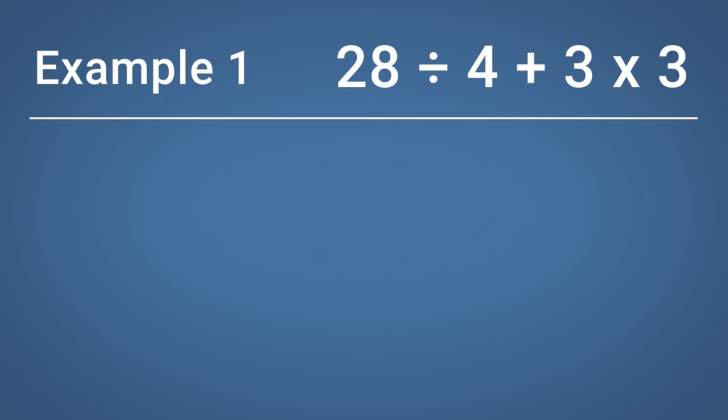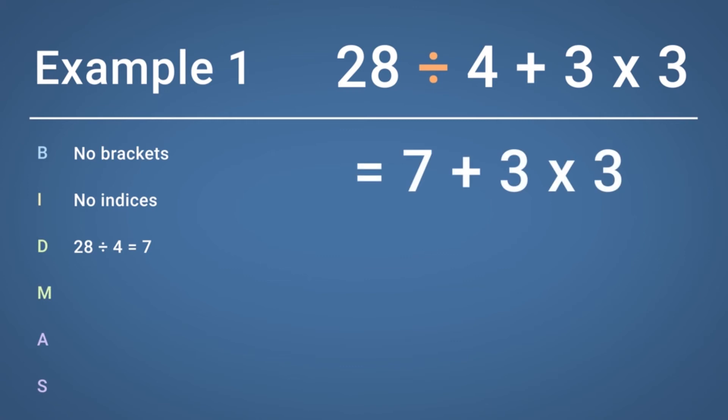Now we know what the BIDMAS rule is, let's take a look at some examples where we can apply it. Calculate 28 divided by 4, add 3, multiplied by 3. Following the order of BIDMAS, we first see if there are any brackets. There are no brackets, so we move on to indices. As there are no indices either, we can now look for any division or multiplication. Division comes first: 28 divided by 4 equals 7. So now we have the sum 7 add 3 multiplied by 3.